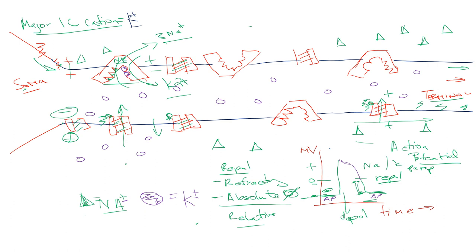Polarity means we have extreme opposites — positive and negative. That change occurs across the cell membrane. Without the channels and pumps, nothing could go in or out because charged ions don't interact well with the phospholipid bilayer. The channel and pump are the only means of going through this process. Remember, a pump works against the natural grain and requires energy — ATP from the mitochondria.